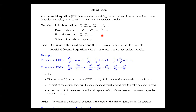Similarly, we can have subscript notation: u sub tt for the partial derivative of u with respect to t and then with respect to t again, or the partial derivative of u with respect to t first and then s second for that second one.